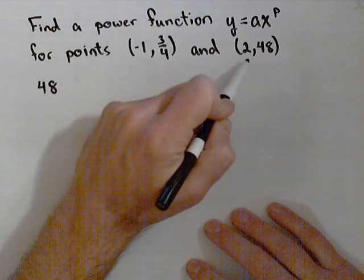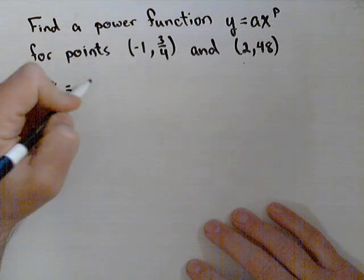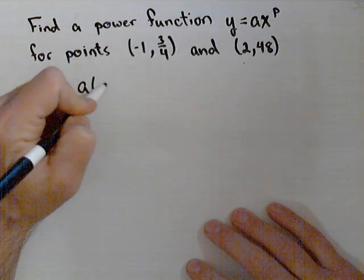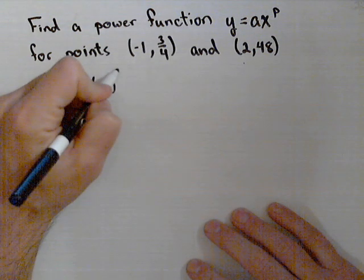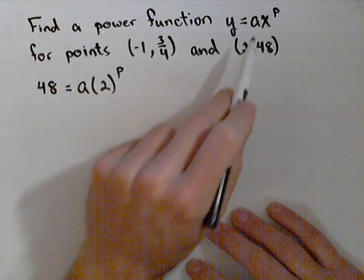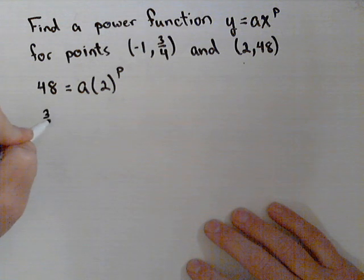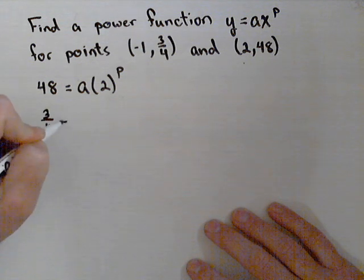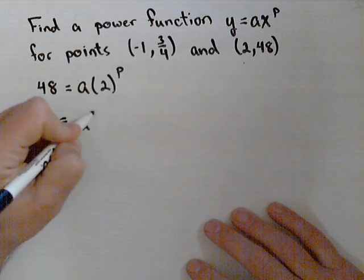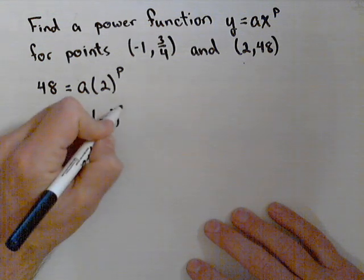So for this point, I know when y is 48 that x must be 2 to the p. So I plugged in my x and y for this point. I'll do the same thing on this one. I know that y is 3/4 when x is (-1) to the p.